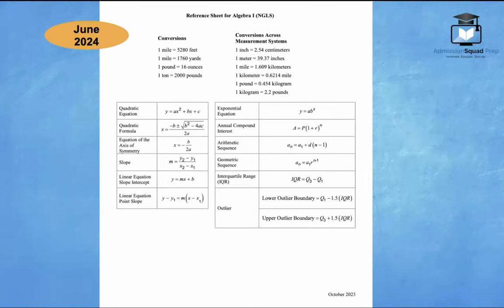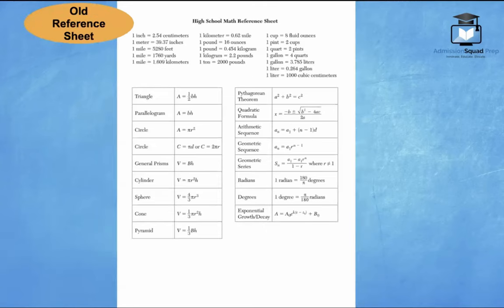So let's take a look at the actual formulas that's going to be on the new reference sheet. So it's written down below here. We have the quadratic equation that is new. We have y equals x squared plus bx plus c. Let's take a quick look at the old reference sheet just so we can compare. So there was no quadratic equation on the old reference sheet.